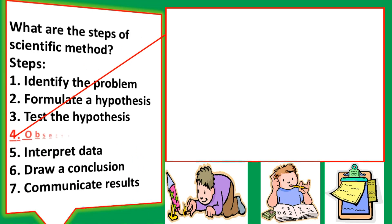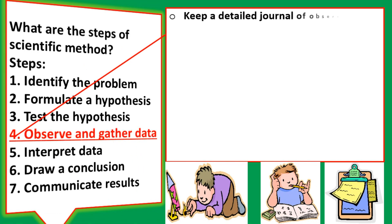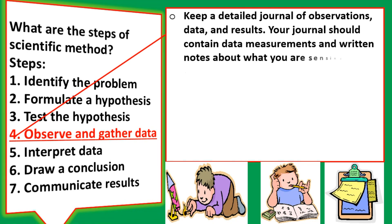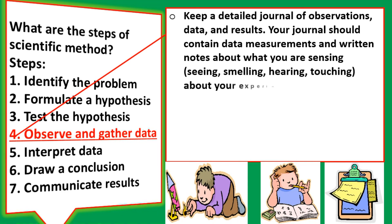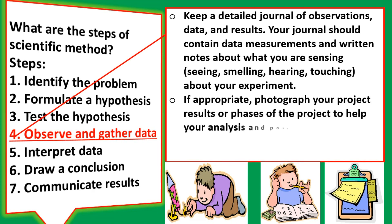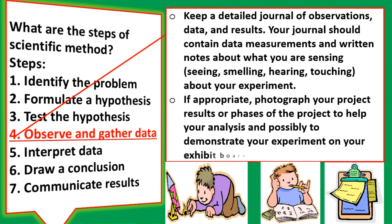Step 4: Observe and gather data. Keep a detailed journal of observations, data, and results. Your journal should contain data measurements and written notes about what you are sensing — seeing, smelling, hearing, touching — about your experiment. If appropriate, include photographs of your project to help your analysis and possibly to demonstrate your experiment on your exhibit board.